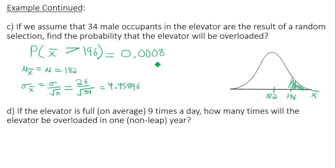Once again, I had to use the central limit theorem because we weren't looking at just one male occupant of the elevator. We were looking at a sample of 34, that their average weight would be more than 196. I had to use my sampling distribution, which had the same mean as we previously used, but the standard deviation does have to be altered slightly.